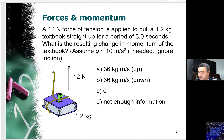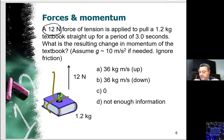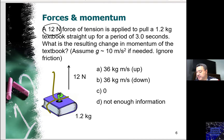Let's look at this example. We have a book sitting on a table that weighs 1.2 kilograms. If I apply a force of 12 Newtons of tension on that book to lift it up for a period of 3 seconds, what is the resulting change in momentum of the textbook?